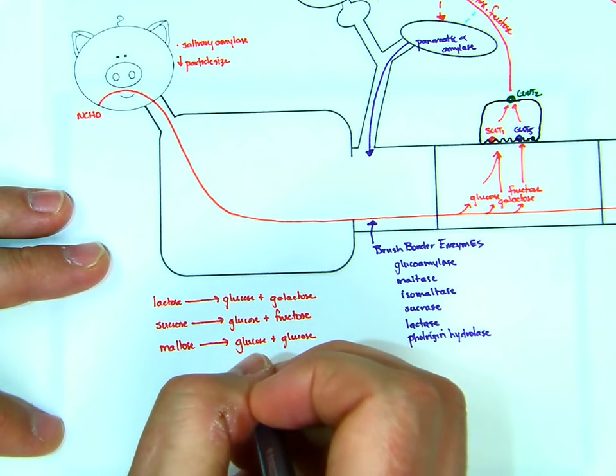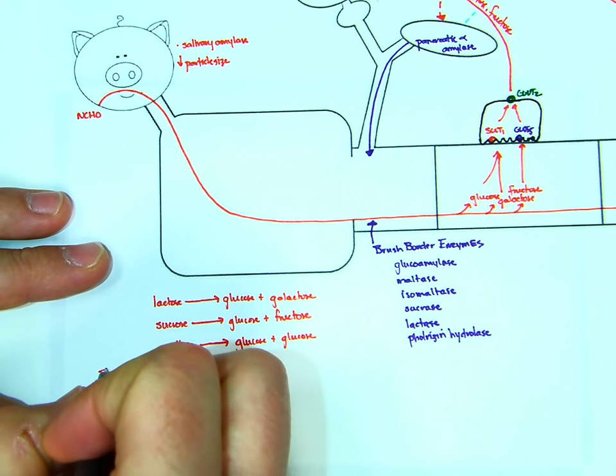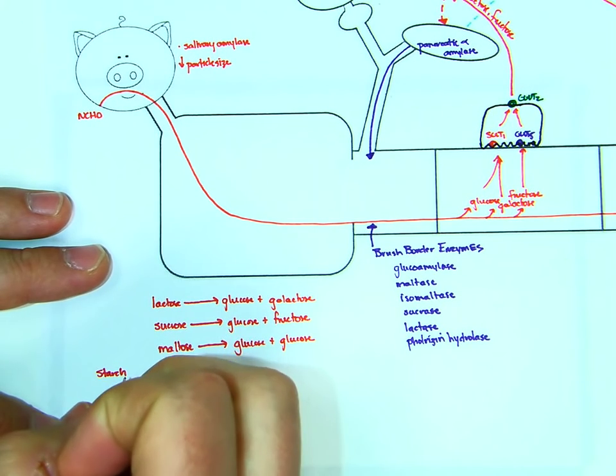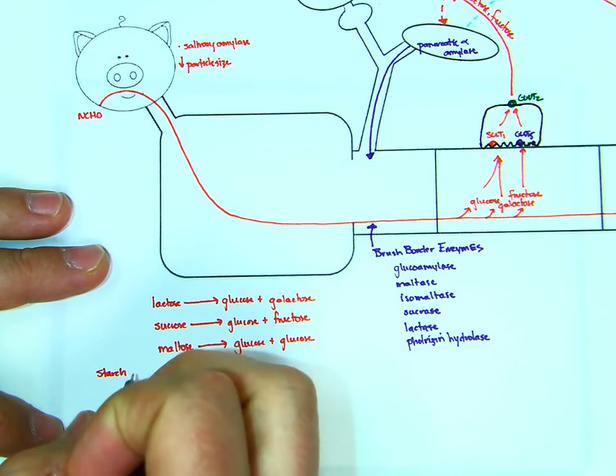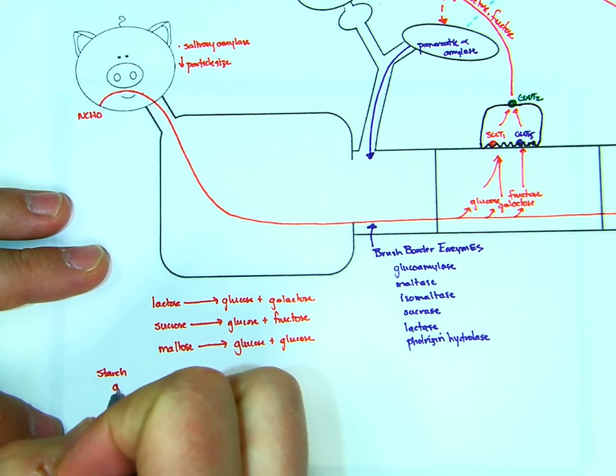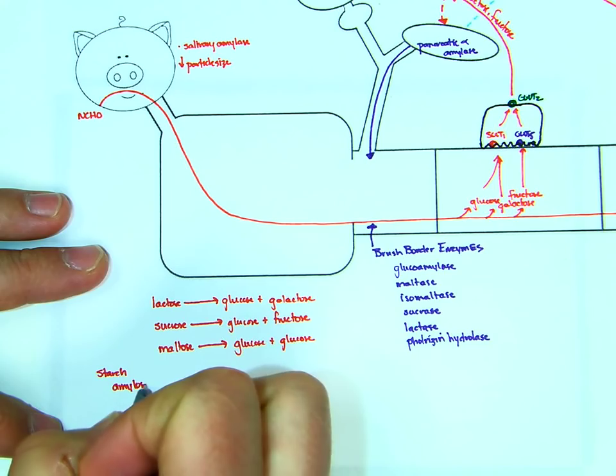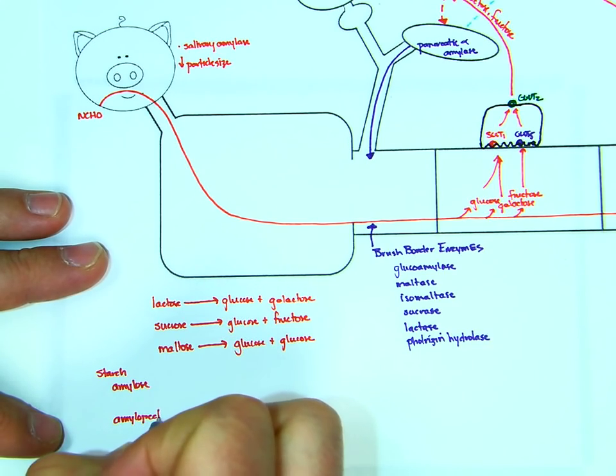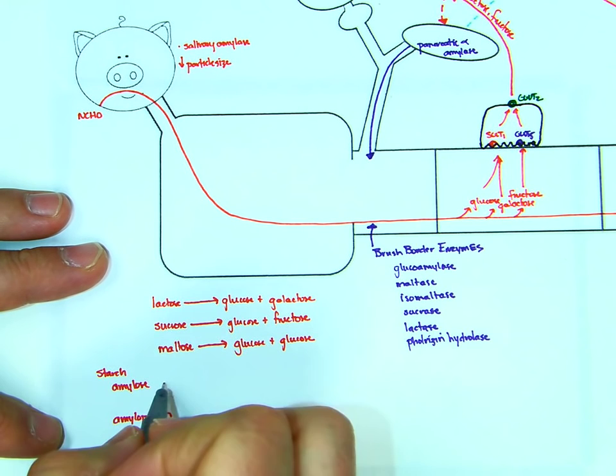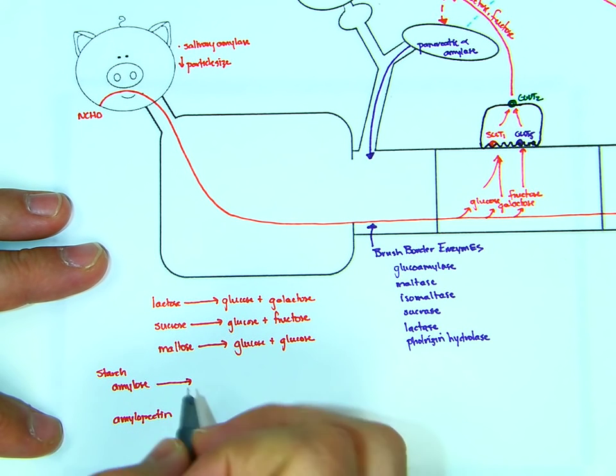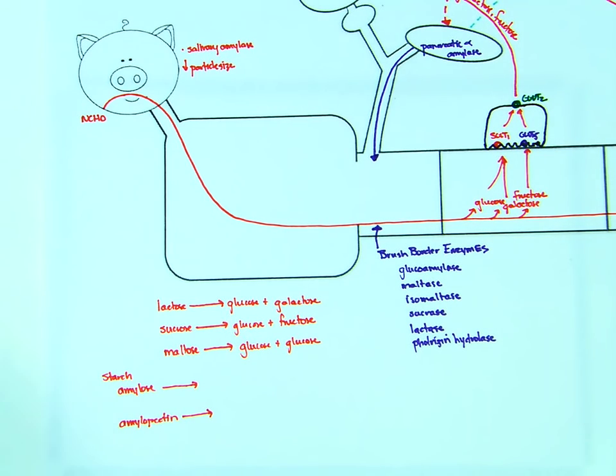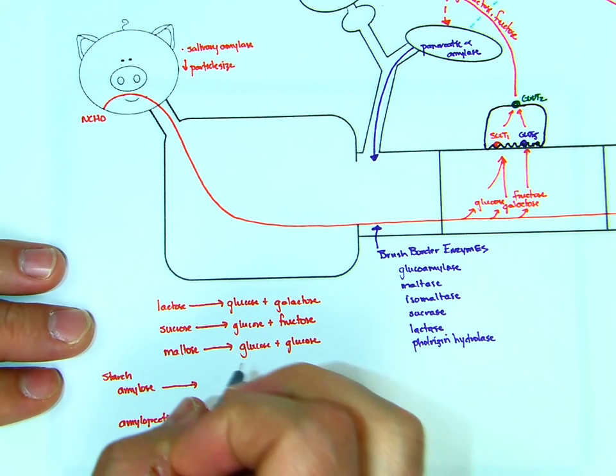And where maltose comes from is starch. And starch has two forms, amylose, amylopectin. Remember amylopectin is the more complicated. It has branch points, amylose no branch points. Amylopectin is very similar to glycogen in its structure.